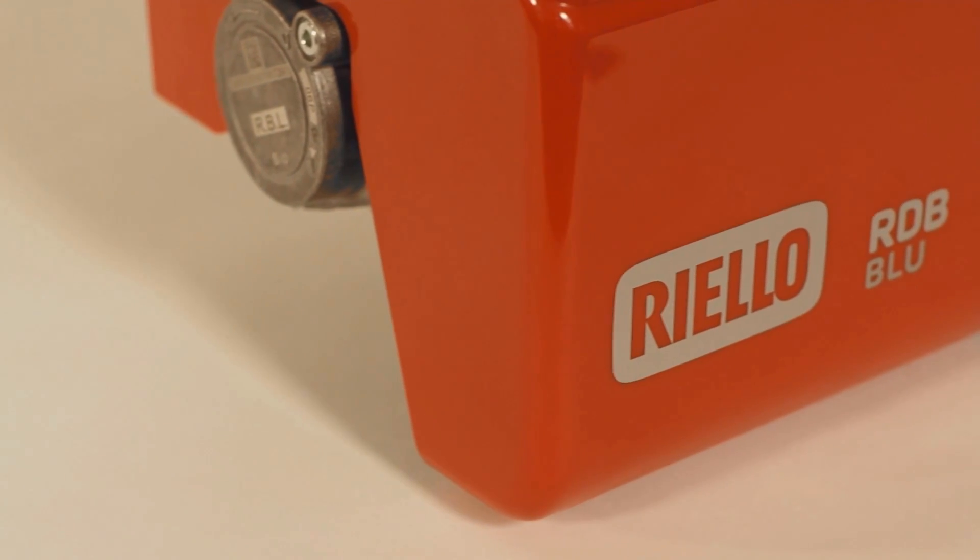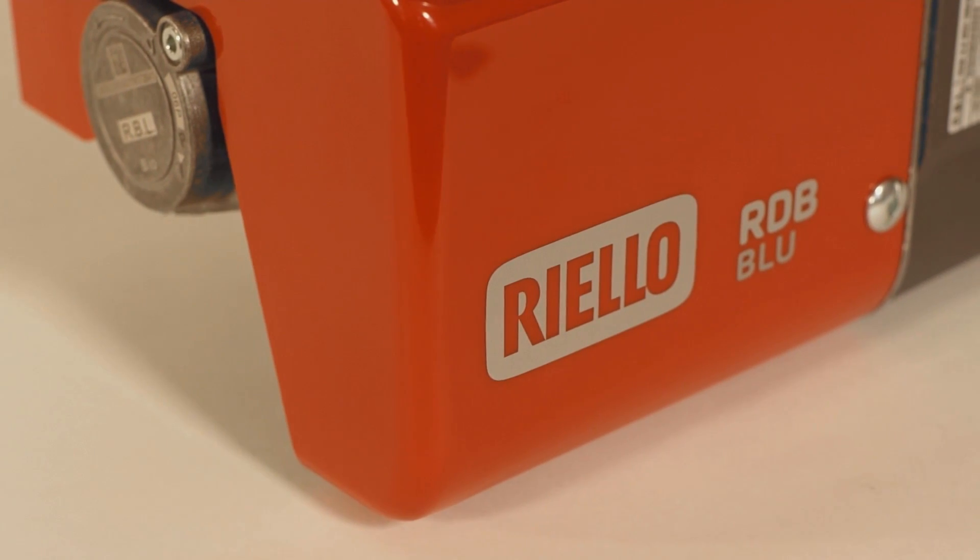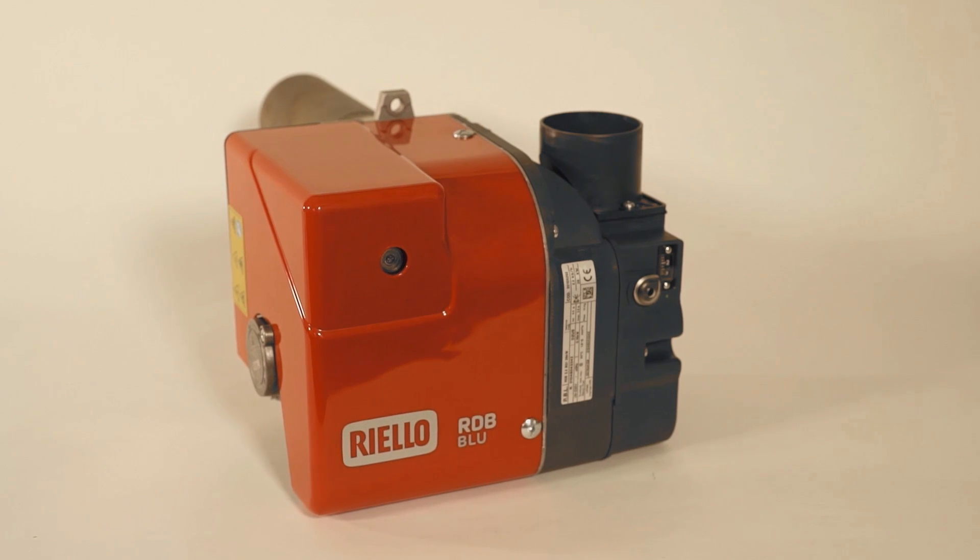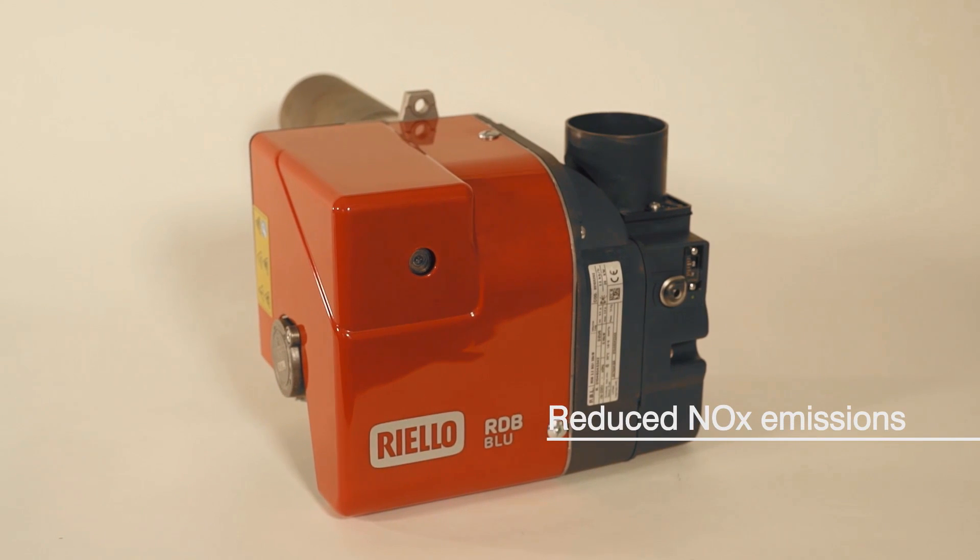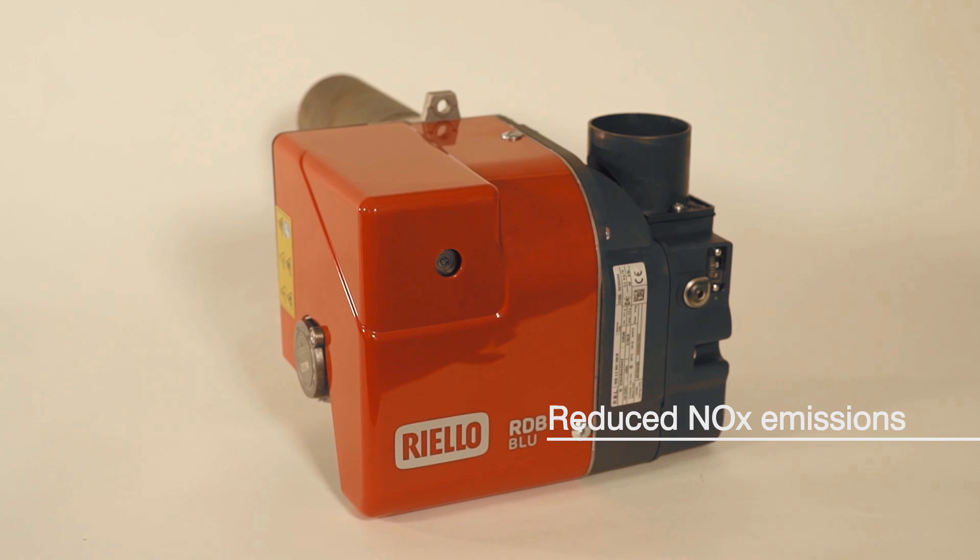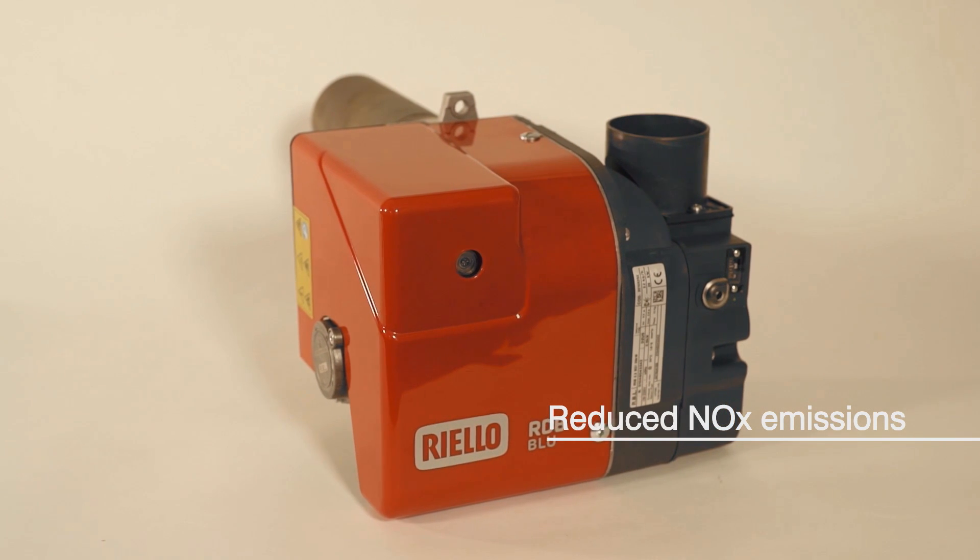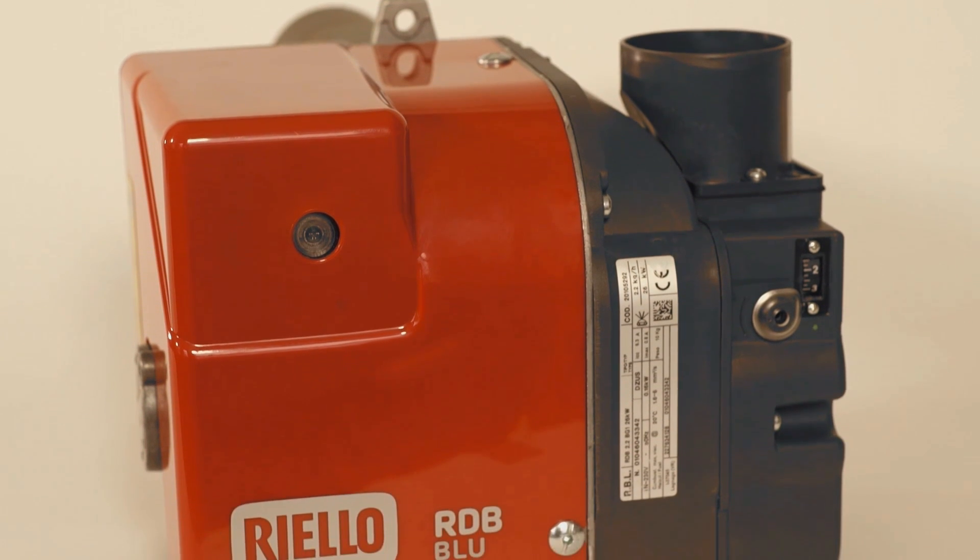Using this burner maintains the high efficiency of the Grant Vortex boilers but reduces the NOx emissions to well below the European limit to be introduced soon and future-proofing the boiler against further reductions in emissions.